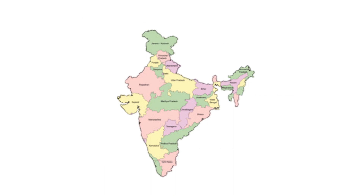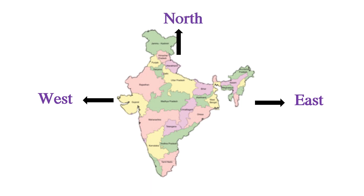How do we find the directions on a map? This is our national map of India. When we stand before the map, the right side direction is East, the left side direction is West, the top direction is North, and the bottom direction is South. Using these tips, we can easily identify directions.